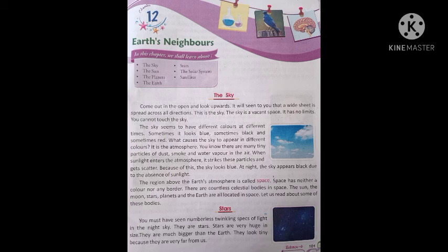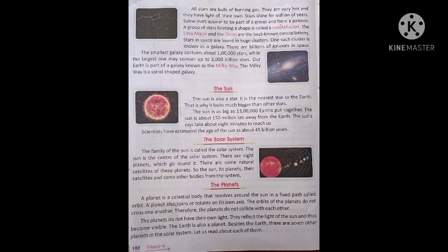Taare aakaar mein bahut hi vishal yaani bade hote hain. They are much bigger than the earth — ve prithvi se bahut bade hain. They look tiny because they are very far from us — ve chhote dikhte hain kyunki ve hamse bahut door hain. All stars are balls of burning gas — sabhi taare jalte hue gas ke gole hain. They are very hot and they have light of their own.